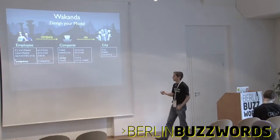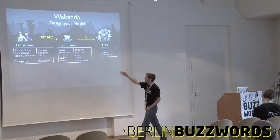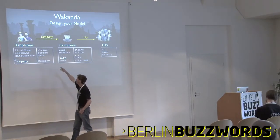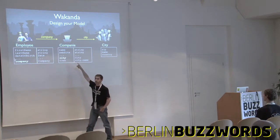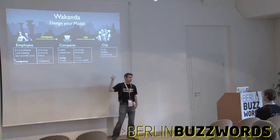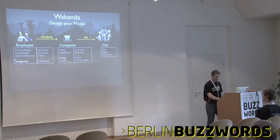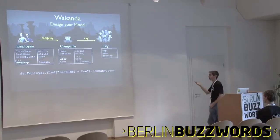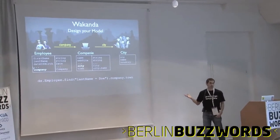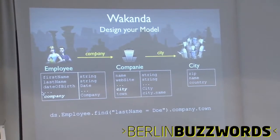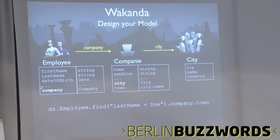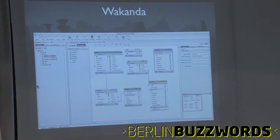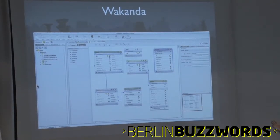So you create your classes. You can say that this employee has an attribute which is a company, so its type is the company you just defined, and it's how it works. Just a little example of how you could access your data from server-side JavaScript — we try to make it as easy as possible. This is just a short view of the model designer.